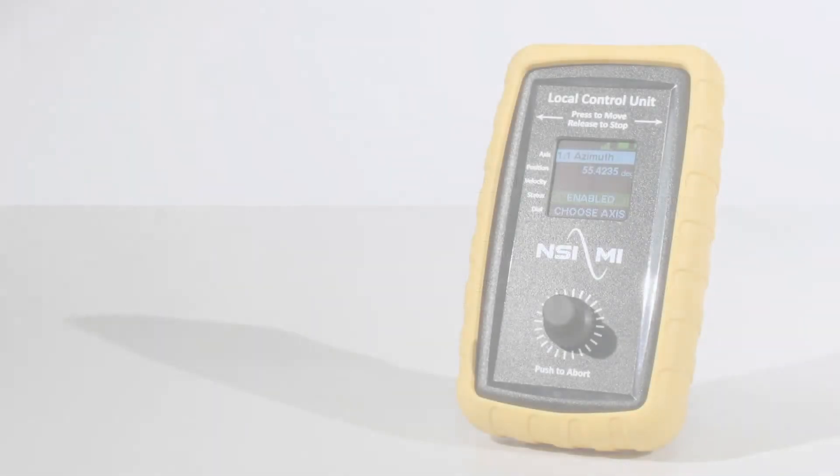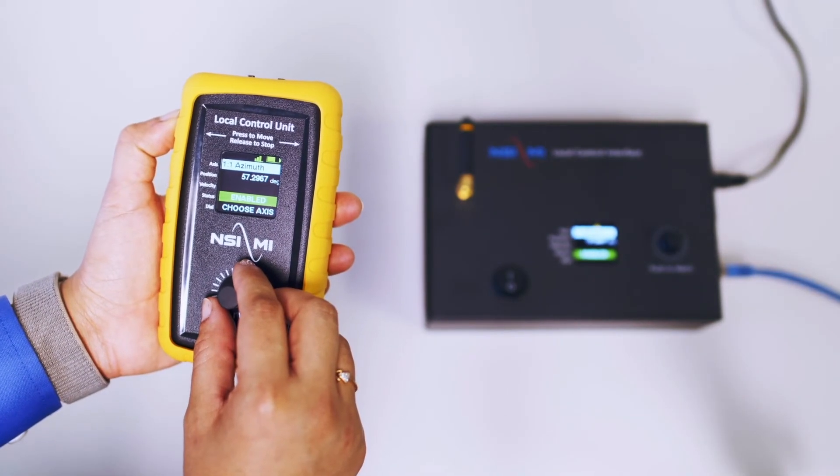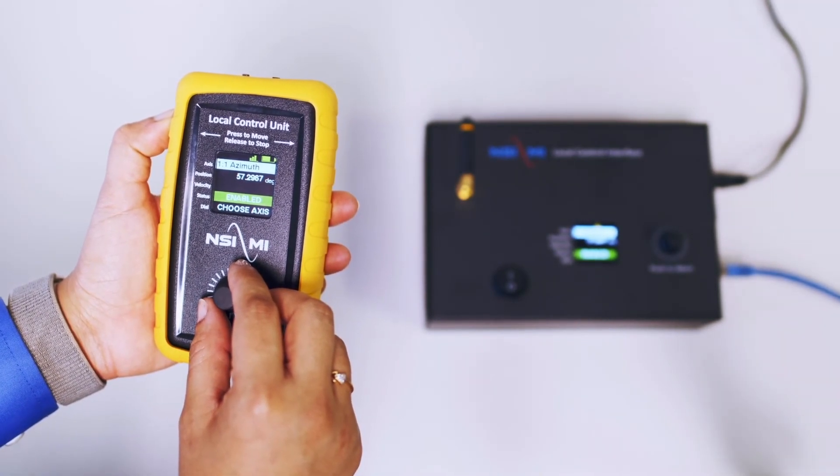On power-up, the LCU will monitor the access information from the LCI unit. It will show the access name and position on the second and third line of the unit. In this mode, you can use the rotary dial to select the desired access.